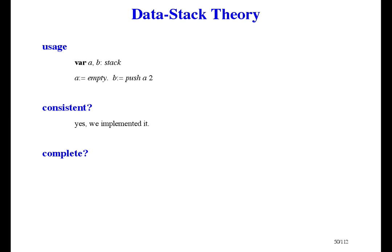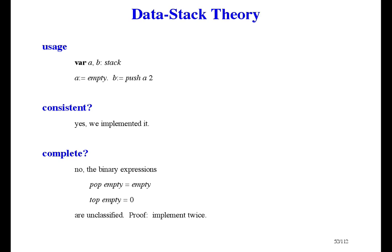The other question about axioms is completeness — this question isn't nearly so important as consistency. Stack theory is incomplete. Here are a couple of binary expressions that are neither theorems nor anti-theorems according to the theory: stack theory doesn't tell us what pop of empty and top of empty are. Our particular implementation makes these two binary expressions theorems, and that's a good example of an implementation being more detailed than the theory it implements. To prove that a theory is incomplete, you have to implement it twice, so that in one implementation some expression is a theorem and in the other it's an anti-theorem. We could make top of empty be one, or two, or anything, and the proof of implementation would still work.